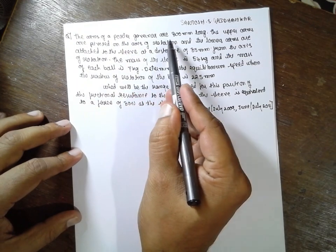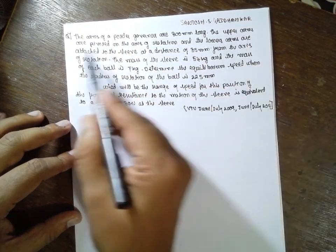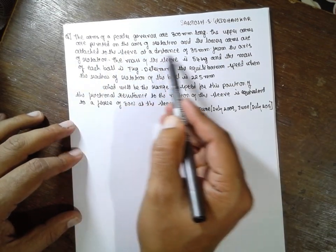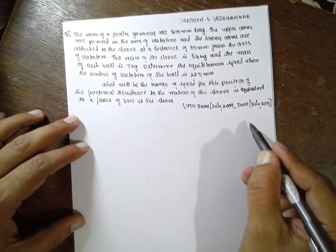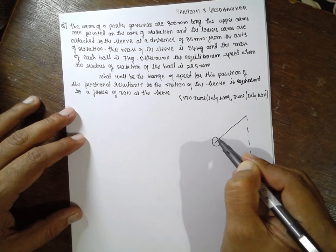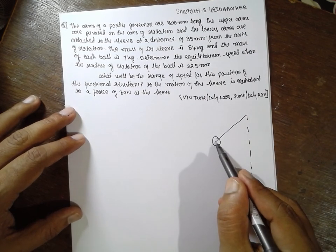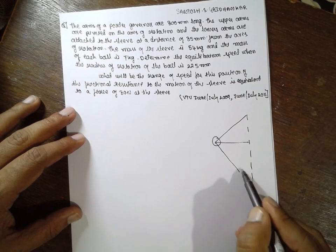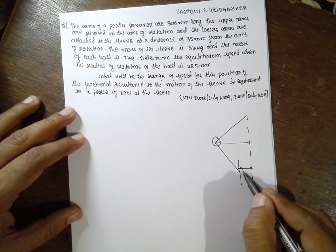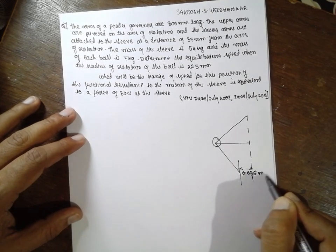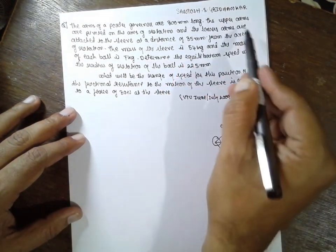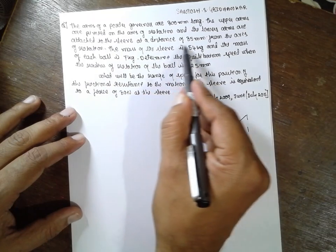The arms of a Porter Governor are 300 mm long. The upper arms are pivoted to the axis of rotation and the lower arms are attached to the sleeve at a distance of 35 mm. As shown in the diagram, this distance is given as 35 mm, which is 0.035 meter. The arm length is 0.3 meter.